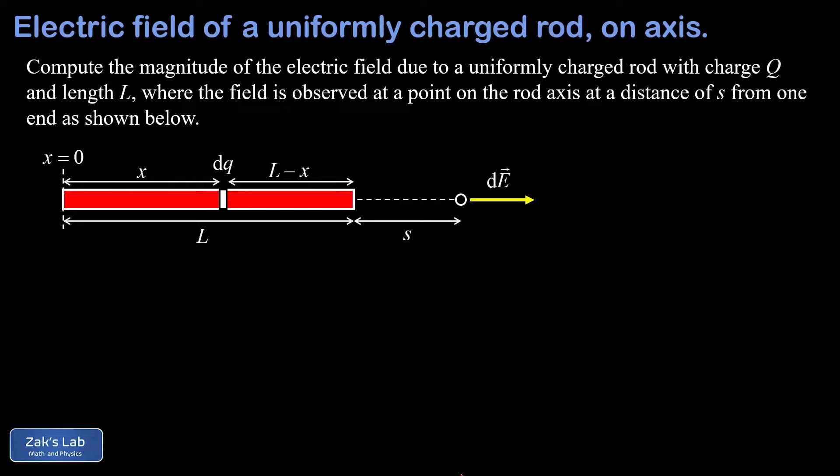That gives us a total distance of s plus L minus x between dq and the observation point. Now before we write down the electric field contribution due to this point charge, we need a quick reminder of the idea of linear charge density.